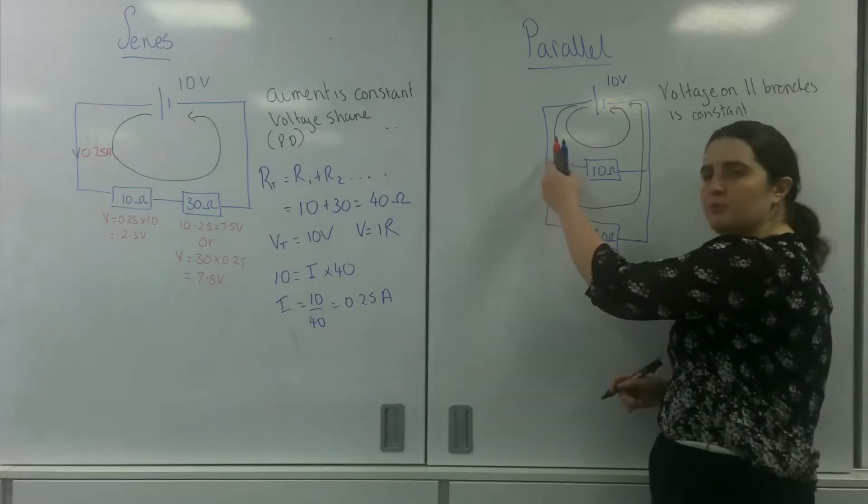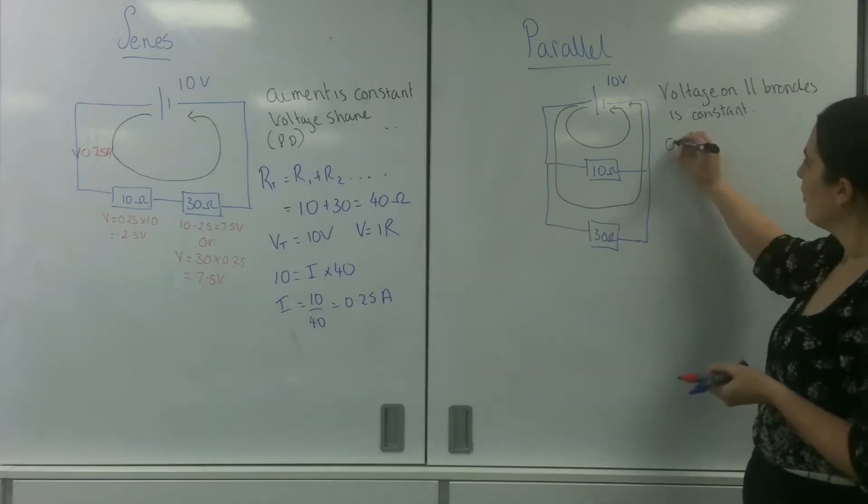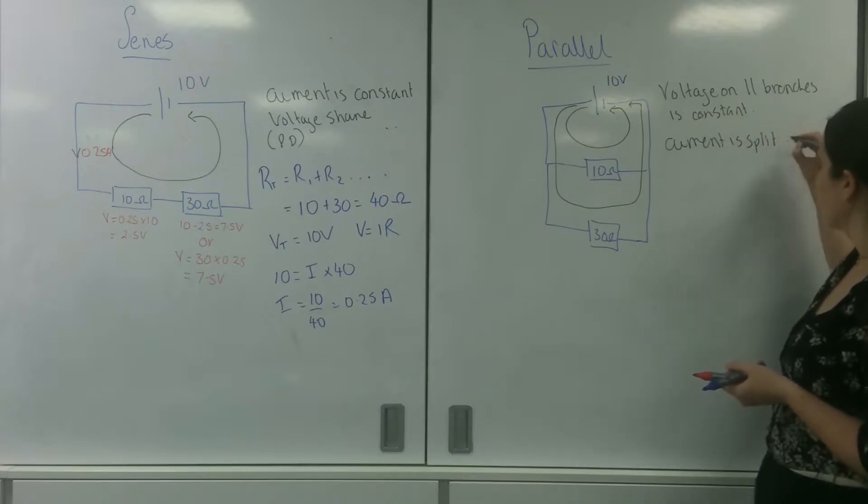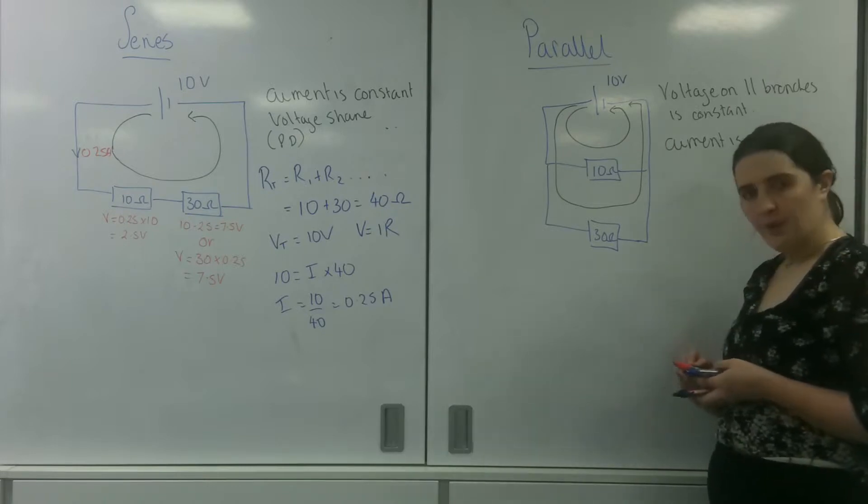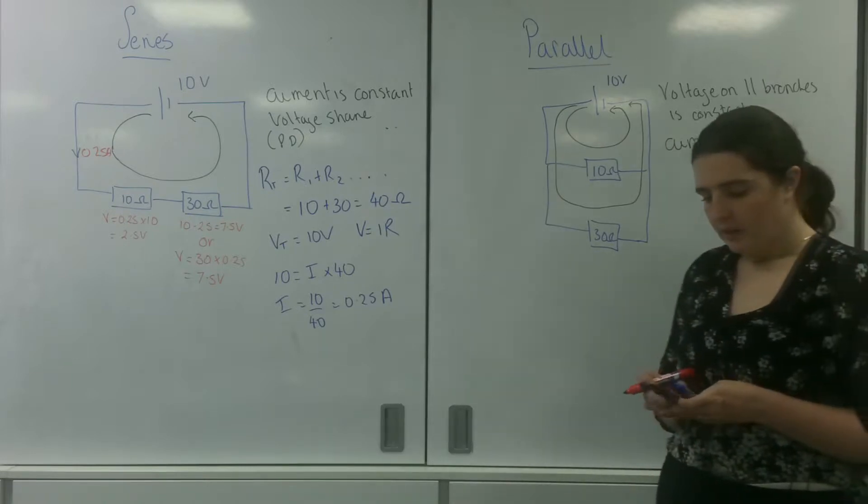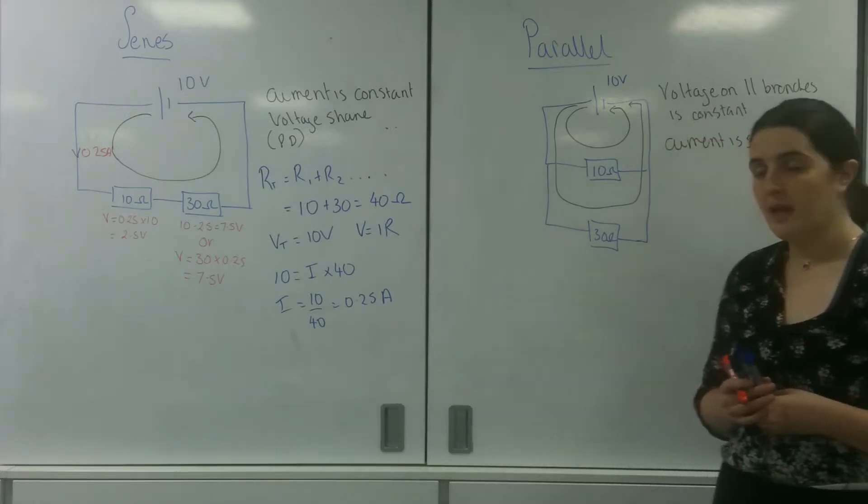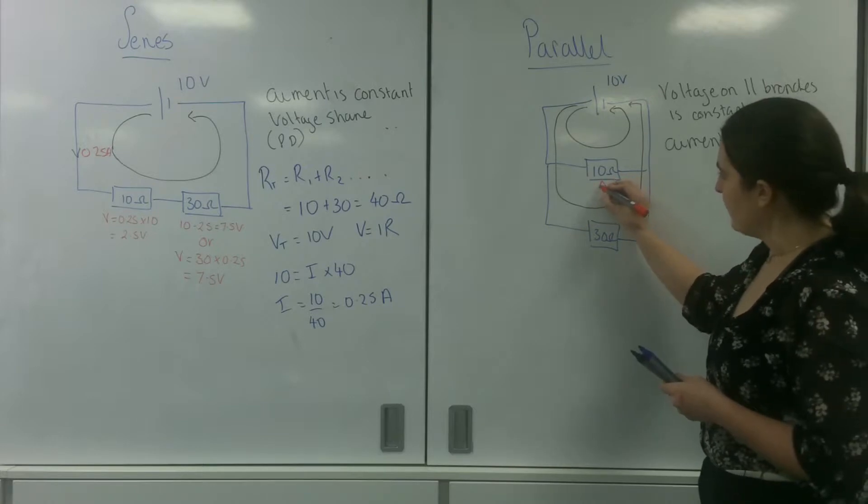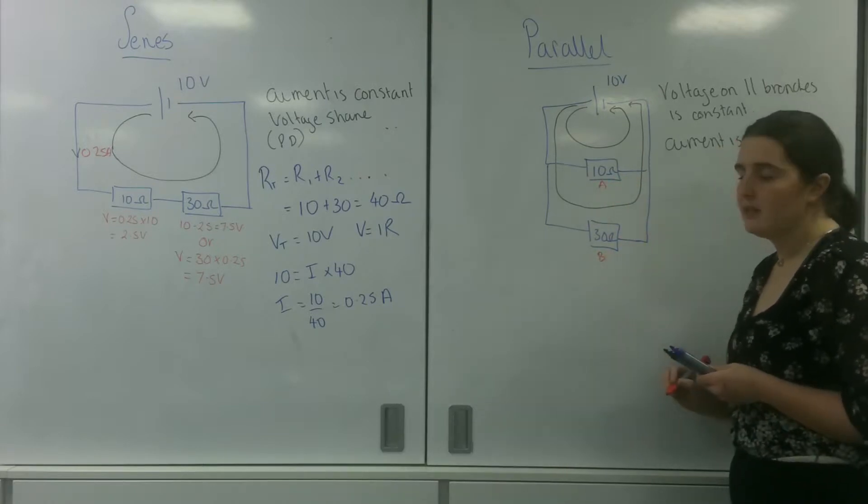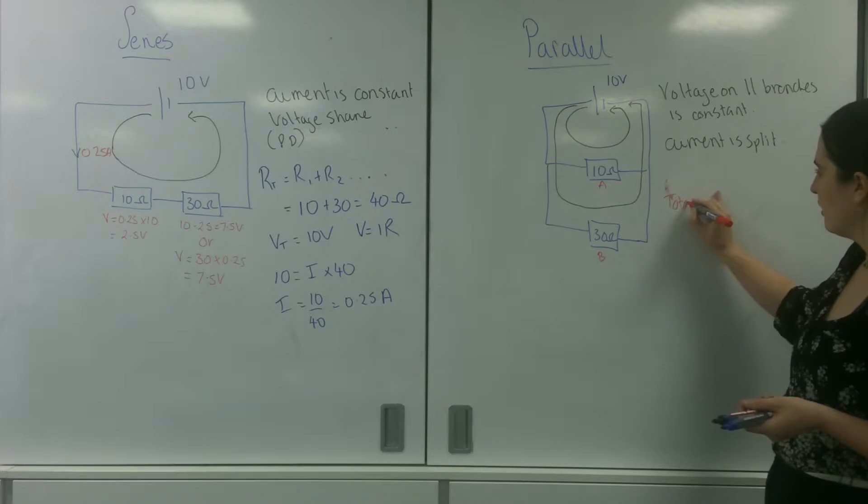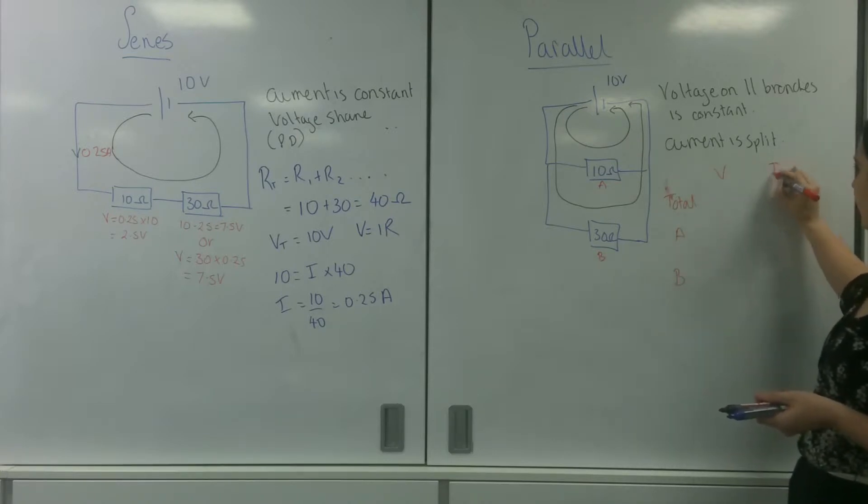However I've got some nodes so my current will split up. So my current is split. So I'm going to do two methods here. I am going to label that this one is A and this one is B and I'm going to write a table out. So I've got V, I've got total, A and B. I've got V, I and R.